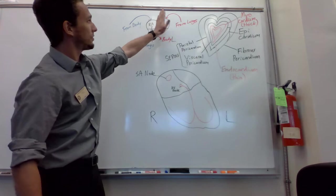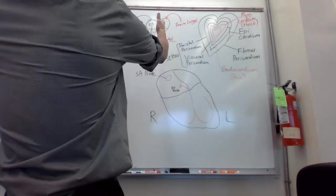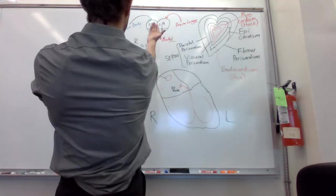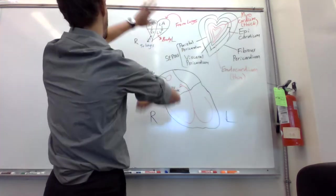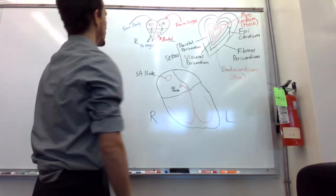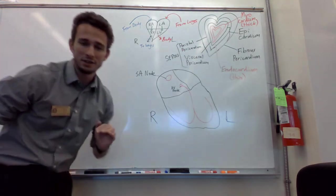So first off, the left side of the heart is as if you are looking at the person, right? So the person is facing you, and their left atria and left ventricles will be on this side, whereas the right atria and right ventricles will be on this side.